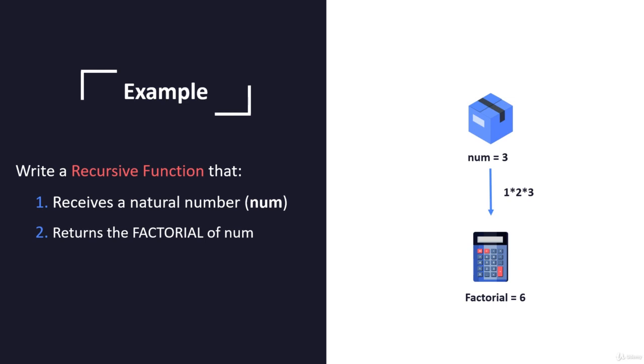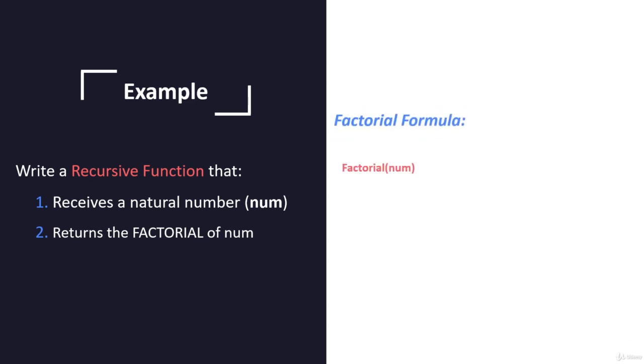And if we want to calculate the factorial for num equals to five, then our recursive function should return the result of one multiplied by two and so on up to five, which is a total of 120. So basically we can say that the function for a given num should return the following result of one multiplied by two multiplied by three and so on up until a given num. So num minus one will be our one element before the last one and num will be our last element in this multiplication factorial formula.